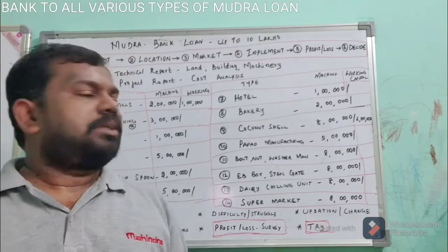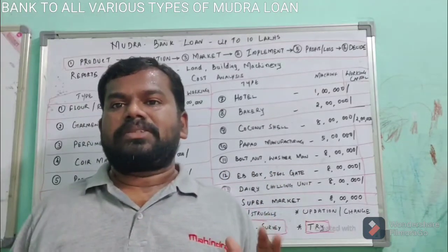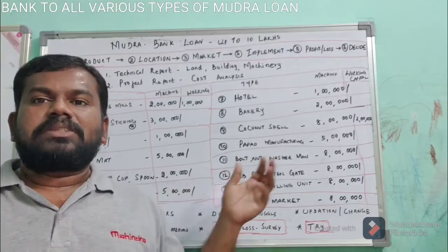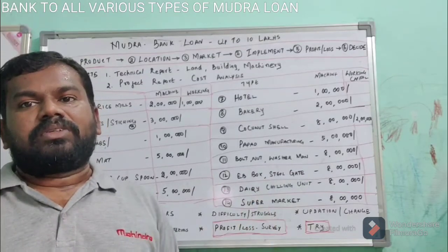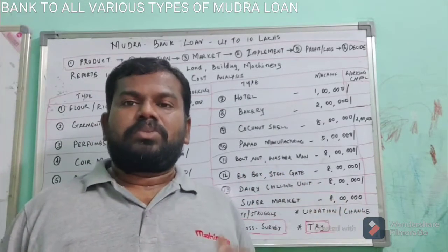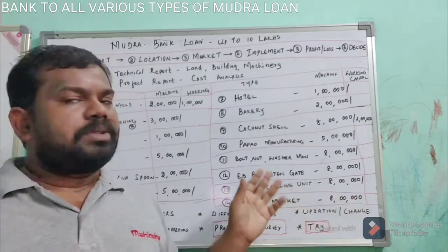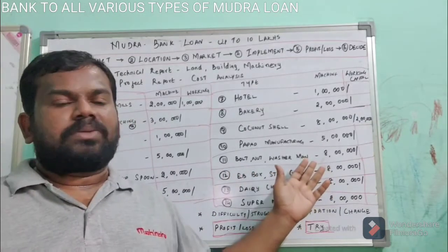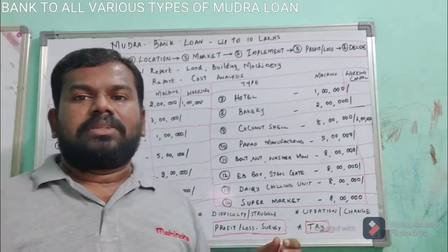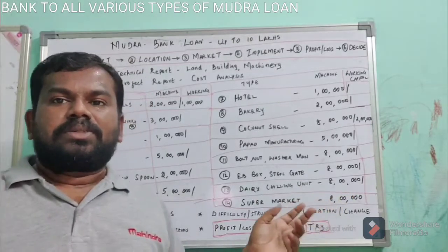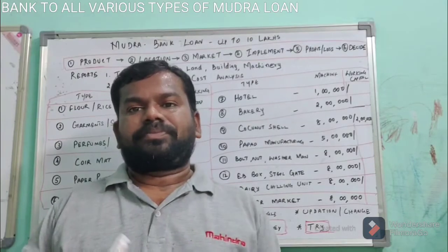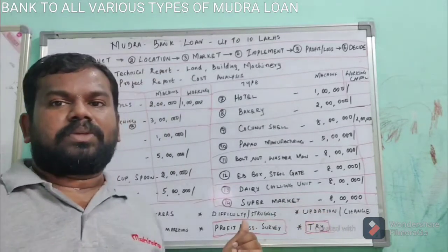Bolt, nut, and washer manufacturing is another business. With a die for different sizes — 6, 8, 10, 12 inches — you can produce washers in bulk. In manufacturing industries, these are bought by weight in kilograms, not by piece count. Wholesale traders like TVS or similar companies buy these. The business is best located remotely to save on rent. Similarly, EB boxes — electrical boxes — require a cutting machine, bending machine, and tilting machine, totalling around eight to ten lakhs. Household items and apartments need EB boxes, including aluminium EB boxes, and many companies manufacture these.